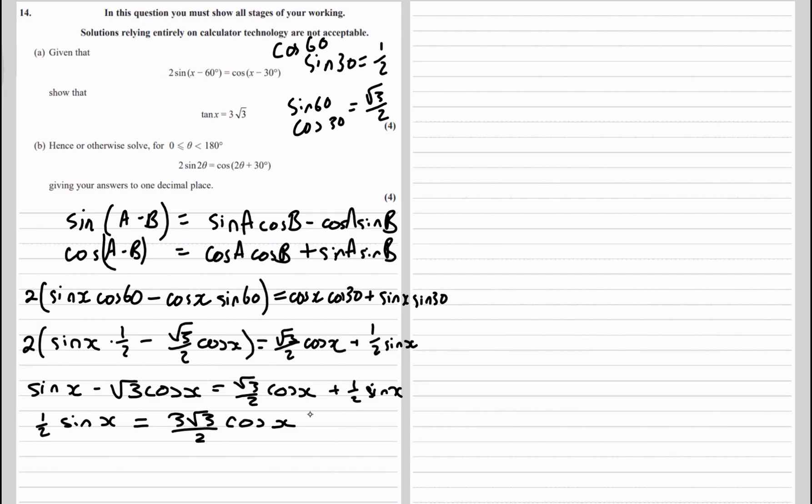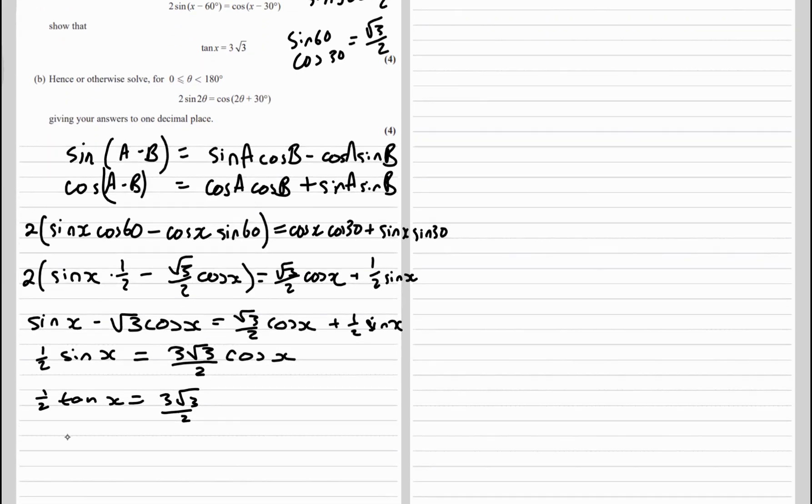To get tan, we're going to do sine over cos, so divide both sides by cos x. Half tan x is 3 root 3 over 2, and then double both sides, so tan x is 3 root 3.